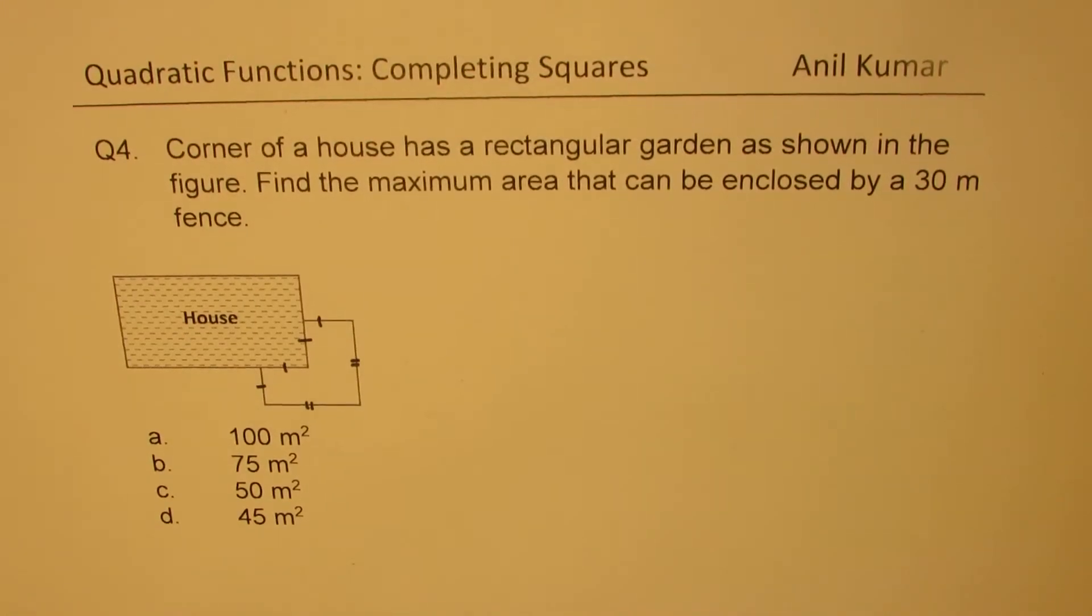I'm Anil Kumar, welcome to my series on quadratic functions. Here is question number four: corner of a house has a rectangular garden as shown in the figure. Find the maximum area that can be enclosed by a 30 meter fence.